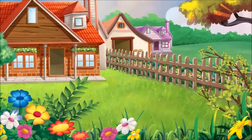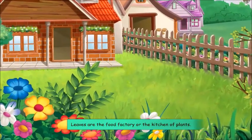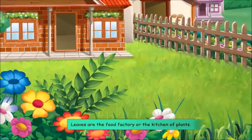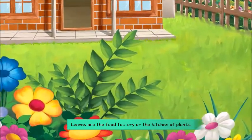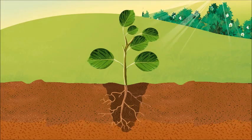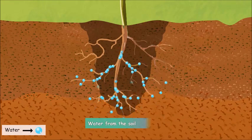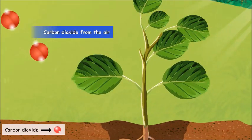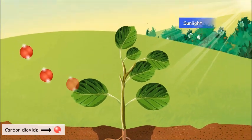In the same way, leaves that are the food factory or the kitchen of a plant need different ingredients for making its food. These ingredients include water from the soil, carbon dioxide from the air, and sunlight.